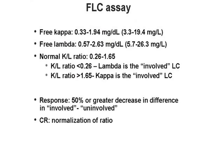Free light chains can increase in polyclonal expansions as well, so an important ratio — the kappa-to-lambda ratio — is used to determine if the increase is due to a monoclonal process. If both are elevated but the ratio falls in the normal range, it's most likely polyclonal. However, if the ratio is abnormal — too high suggesting excess kappa, or too low suggesting excess lambda — that usually indicates selective expansion of one light chain, pointing to a monoclonal protein.